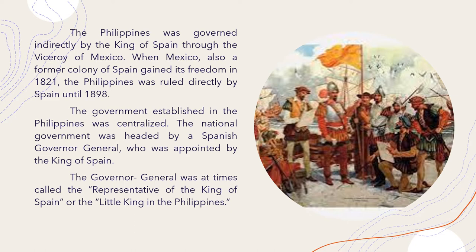If the pre-colonial government was characterized by independent barangays, the Spaniards consolidated power under a centralized government led by the governor-general. With his authority based in Manila or in Intramuros, the governor-general was an all-powerful individual. He had executive, legislative, judicial, administrative, as well as military powers. The centralization of powers and the creation of a basic unitary government is thus a Spanish influence.